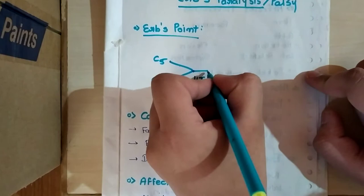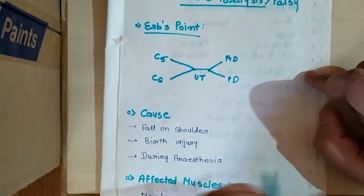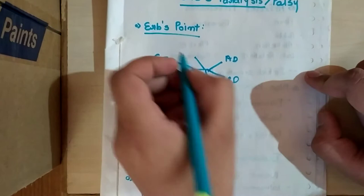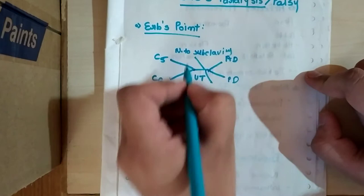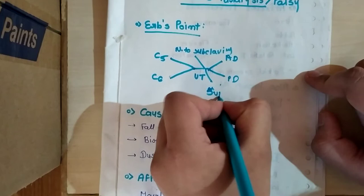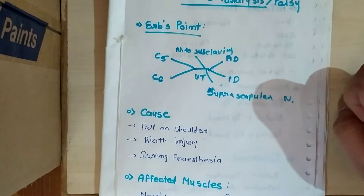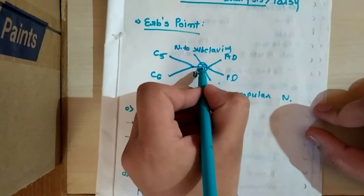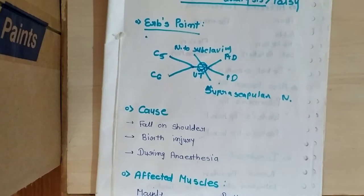This is the upper trunk, and from the upper trunk there is formation of two divisions known as anterior division and posterior division. From the upper trunk there are two nerves which are arising: nerve to subclavius and suprascapular nerve. You can see it forms a point and this is the point that is called Erb's point.